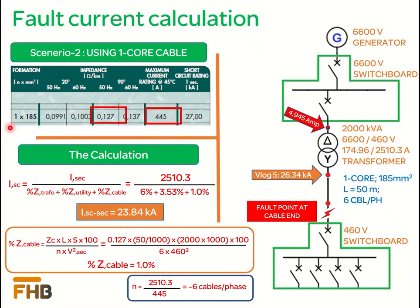We are discussing this second scenario to notice the effect of taking single core cable instead of four core cable of the same size 185 mm² on the short circuit current. First thing to notice is that the current carrying capacity of the single core cable is more than the four core cable. Therefore the number of cables per phase are reduced to six cables.